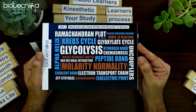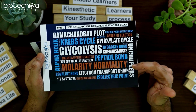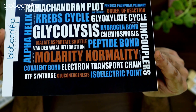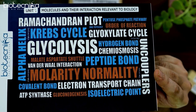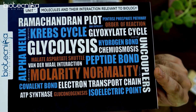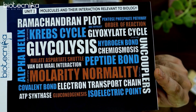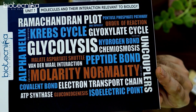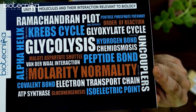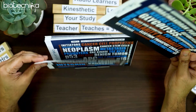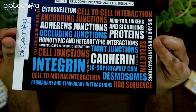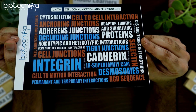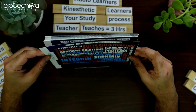If you closely look at this Concept Cloud, it has been designed in a very scientific way. It has different colors — each word will come out in a different way to you. All the terms are in different font sizes as well. The reason they are in different font sizes is: the most important concept is in the biggest font, and the least important is in the smallest font. For example, here is a card from cell communication and signaling — Integrin is important, Cadherin is important, cell junctions are important. The moment you see 'cell junctions', you will try to recall it.